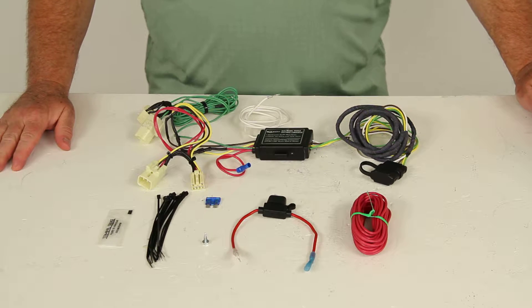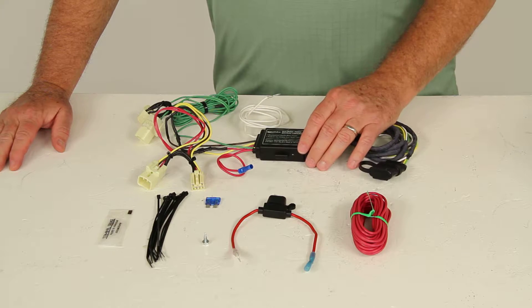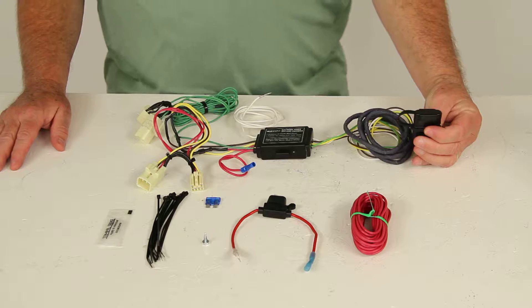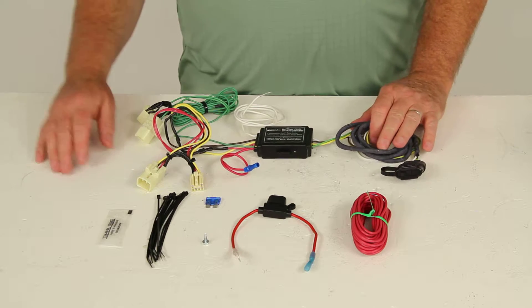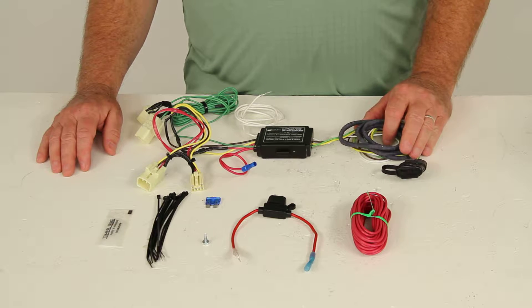Today we're going to review part number HM11143814. This is the Hopkins plug-in vehicle specific wiring harness with the four pole trailer connector. Now this is a custom fit part number, it's designed to fit the Hyundai Elantra Coupe starting in 2014.